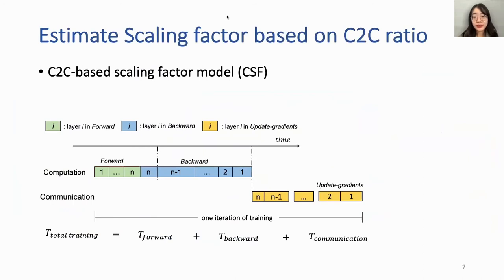Here we depict the timeline in distributed deep learning. The forward path green boxes represent forward time in each layer from layer i to layer n. Next is backward time from layer n to layer 1, and finally communication time. We roughly compute training time by summing forward, backward, and communication time. This is the main idea behind the communication-to-computation ratio, or C-to-C ratio, commonly used by researchers to estimate scaling factors.